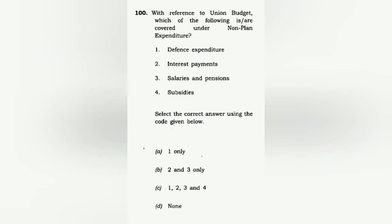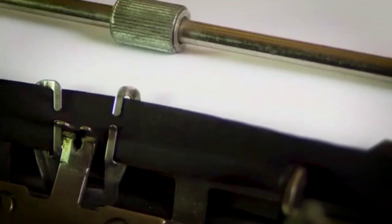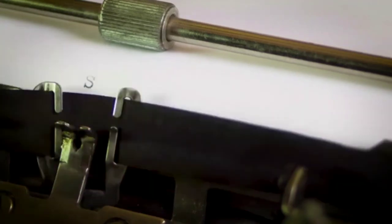With reference to the Union Budget, which of the following are covered under non-plan expenditure? It's surprising that the budget paper had such a simple question, but the correct answer is C: one, two, three, and four — all are correct. Defense, interest payments, salaries and pensions, and subsidies all fall under non-plan expenditure.